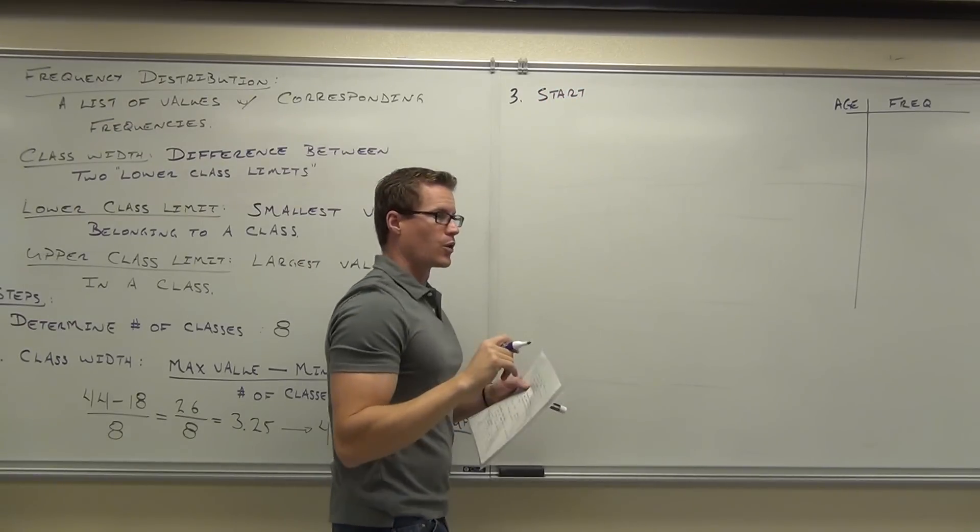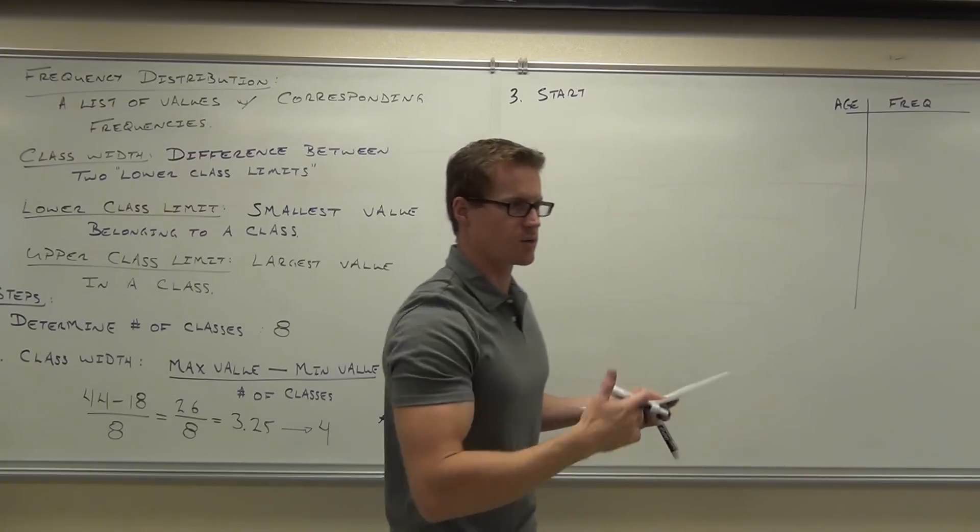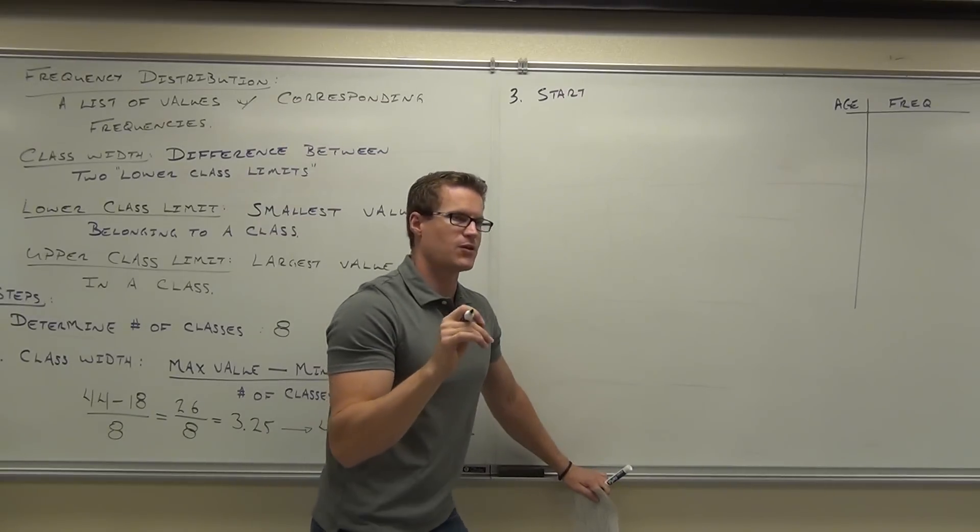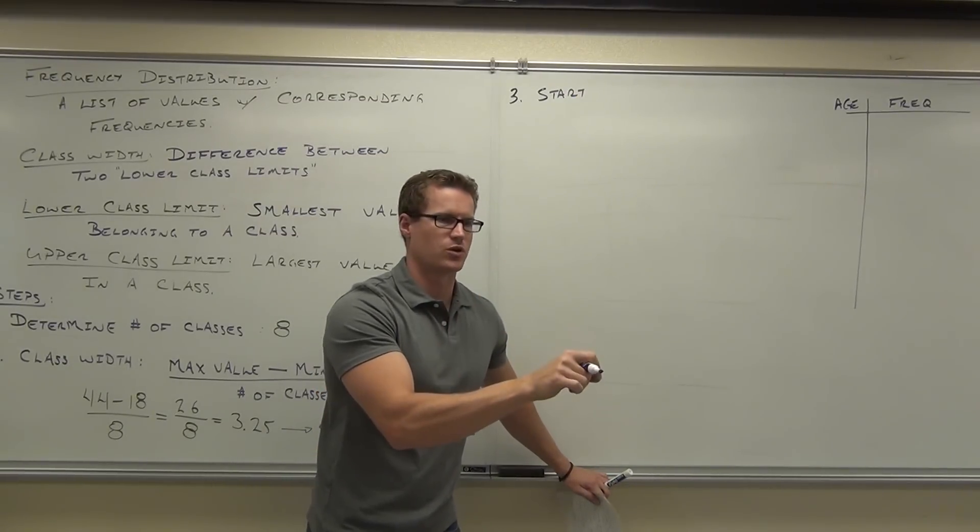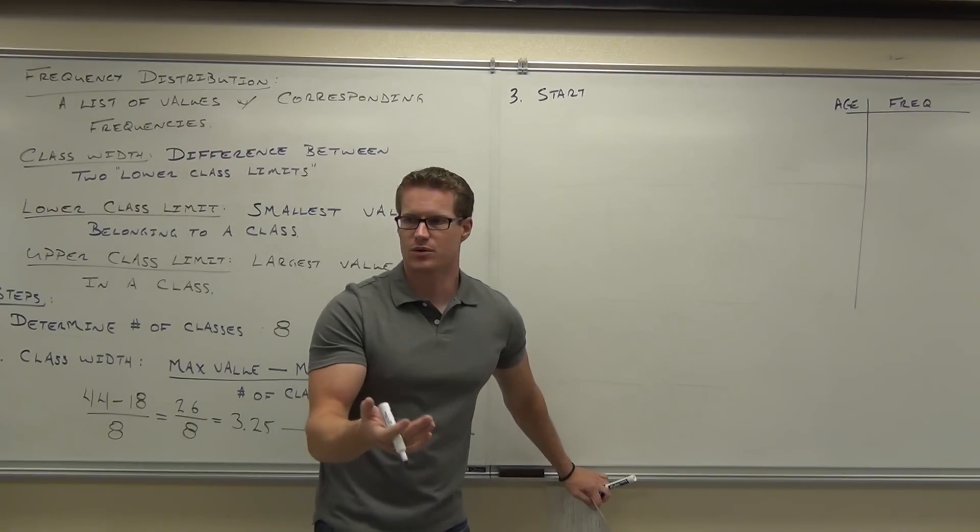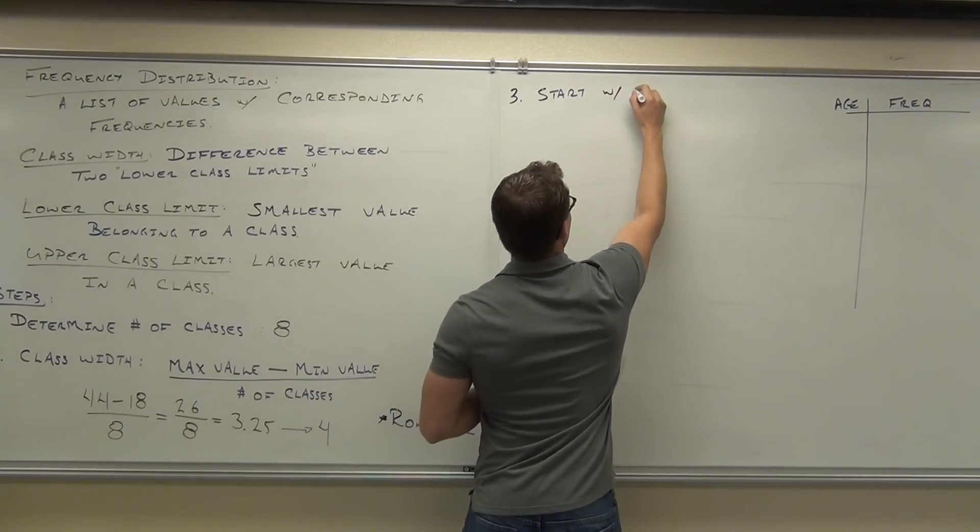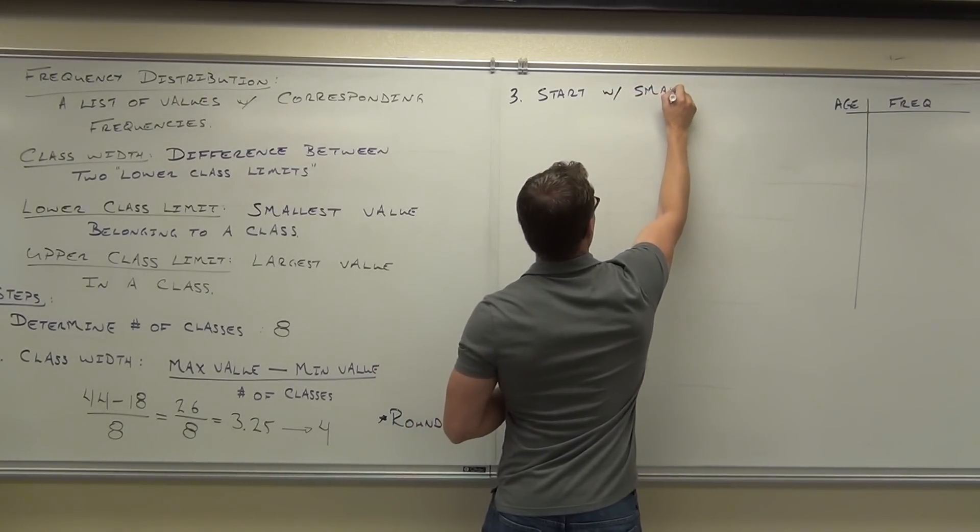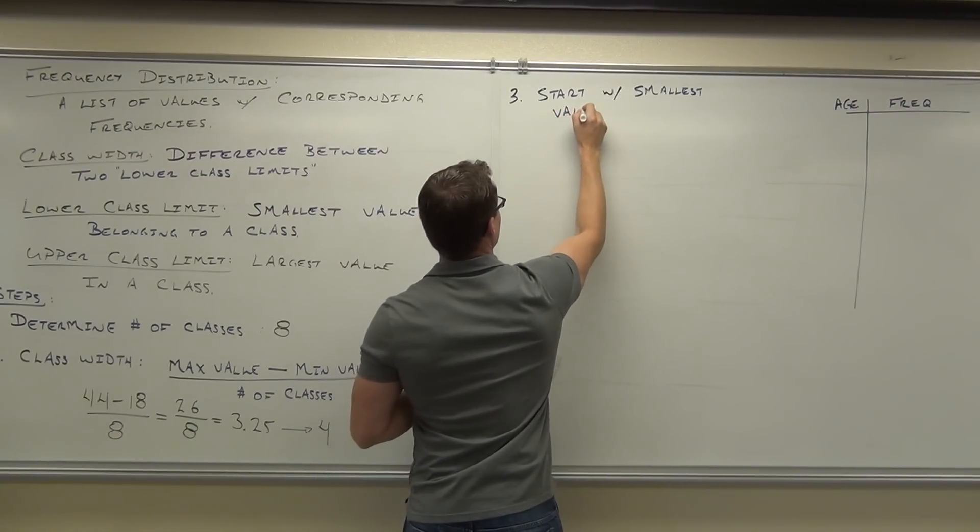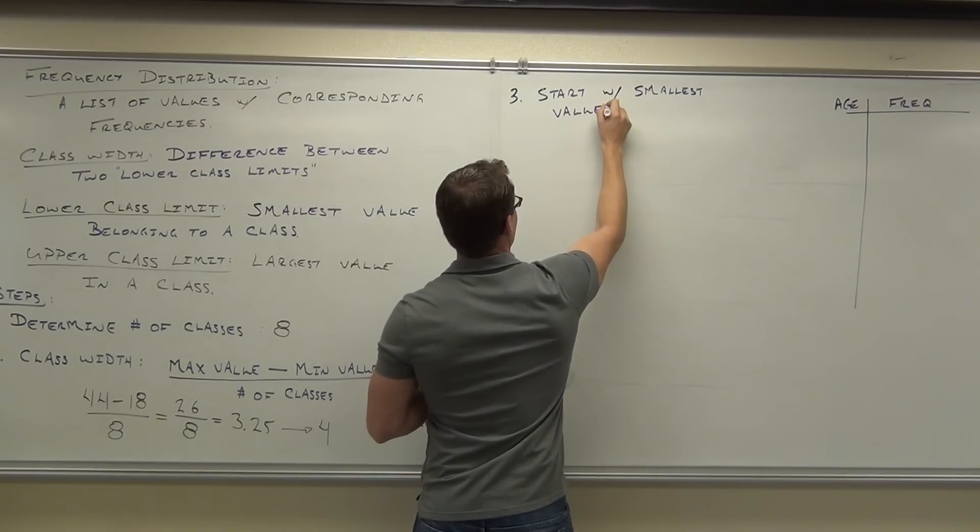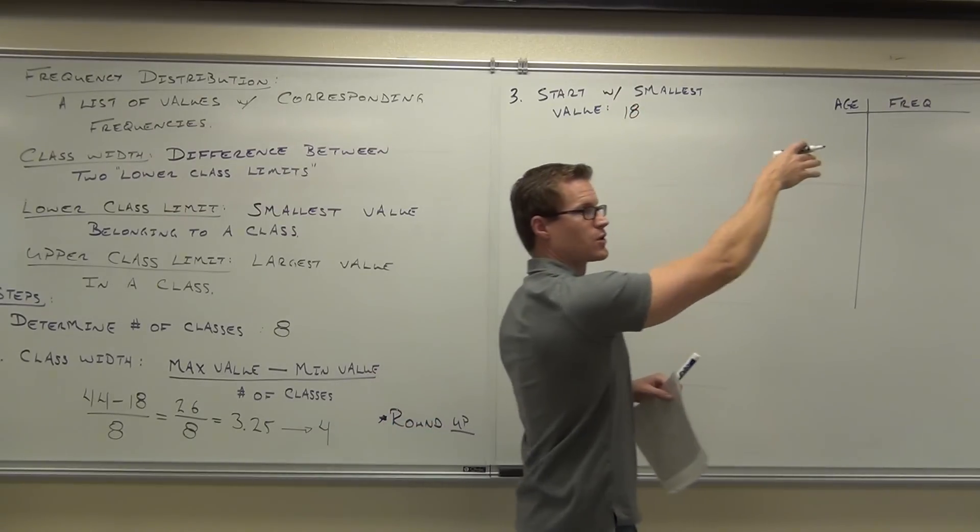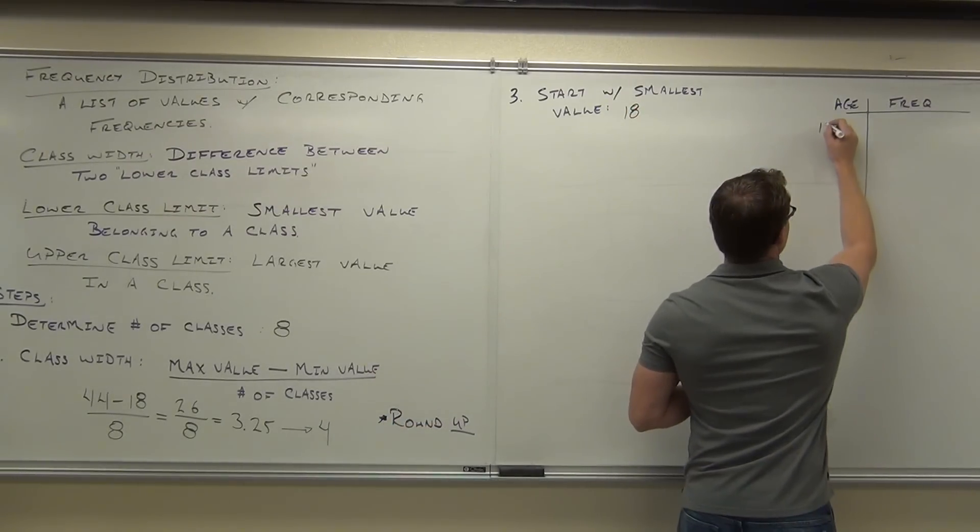And typically, we're going to start with the minimum value. That seems obvious. That'll include everybody. Or you could, if you want to do this, you can start with a value just below your minimum value. So I can start with 17 if I wanted to. But typically, you start with your lowest value. And so in our case, we had 18. So over here, we finally get to start filling this thing out. I'm going to put 18 right here.